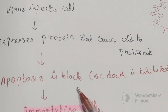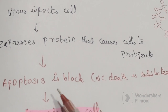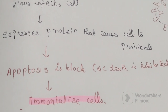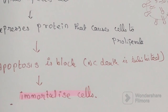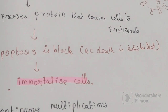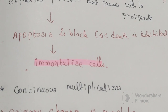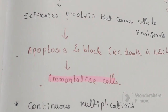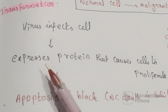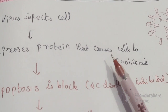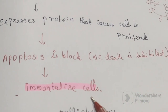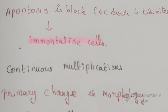Apoptosis — normal cell death — is inhibited. As a result, the cell will become immortal, meaning no cell death occurs. This leads to continuous multiplication of cells.